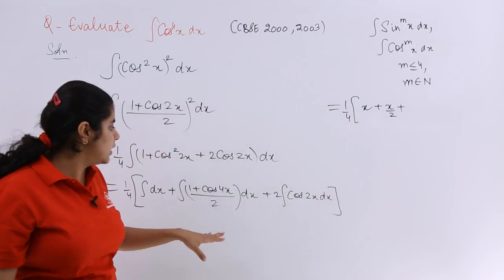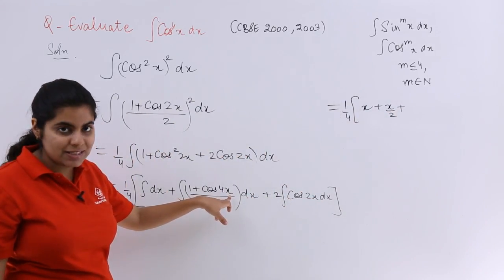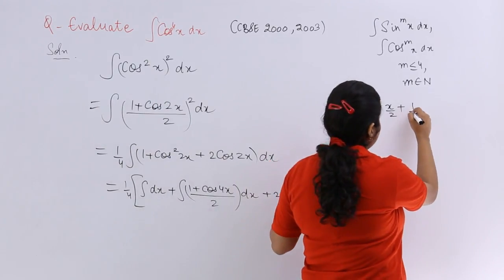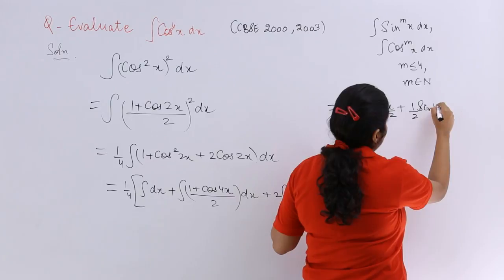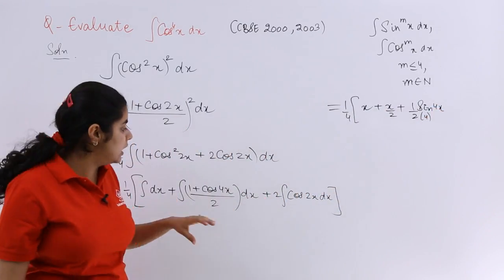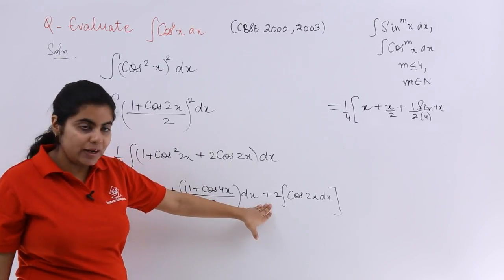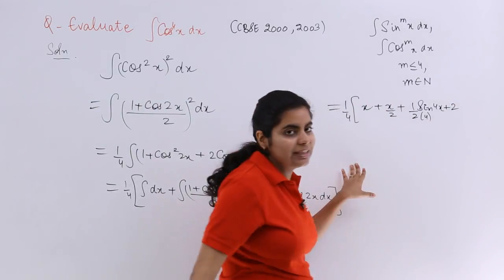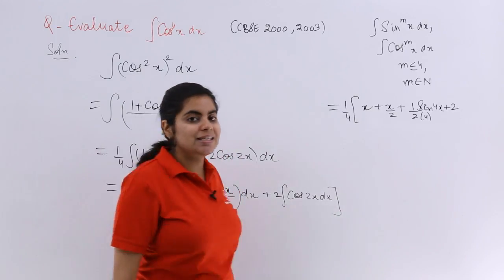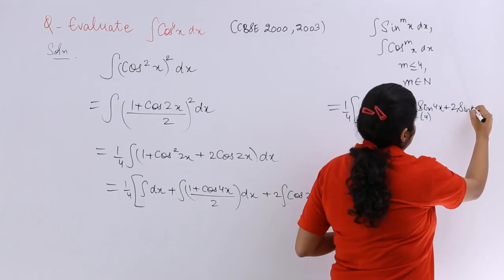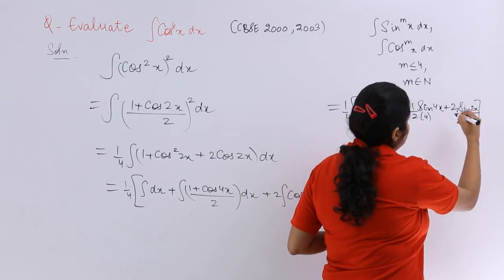Then plus what is integration of cos 4x whole over 2? So it is 1 by 2 sine 4x and we have 4 also in the denominator. Then next is 2 already there. So plus 2. Then what is the integration? Cos 2x integration is sine 2x.